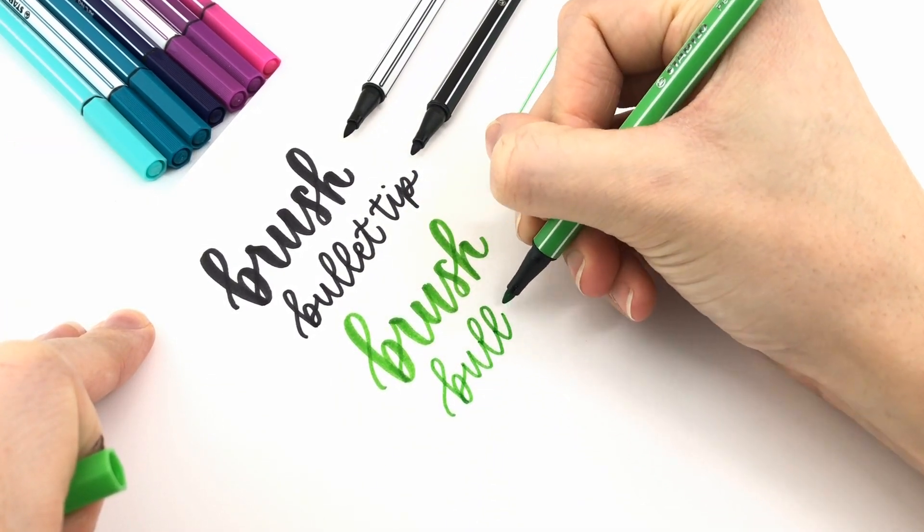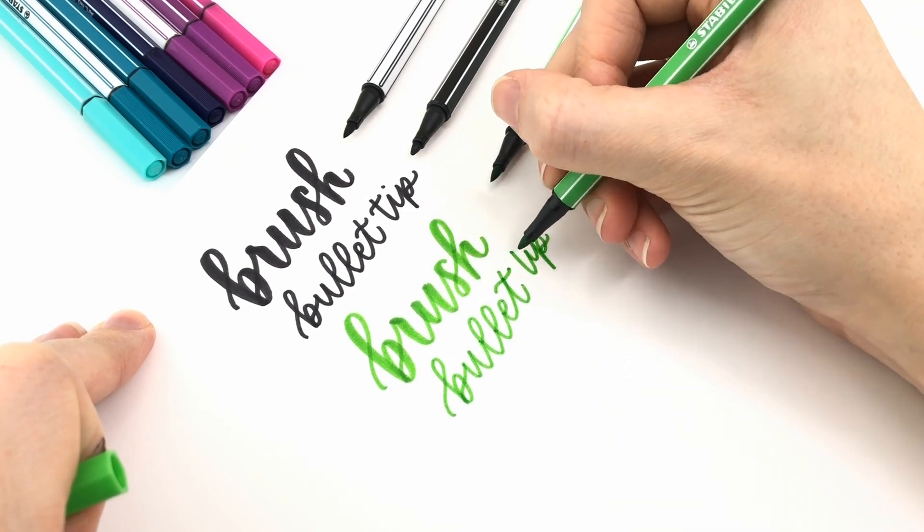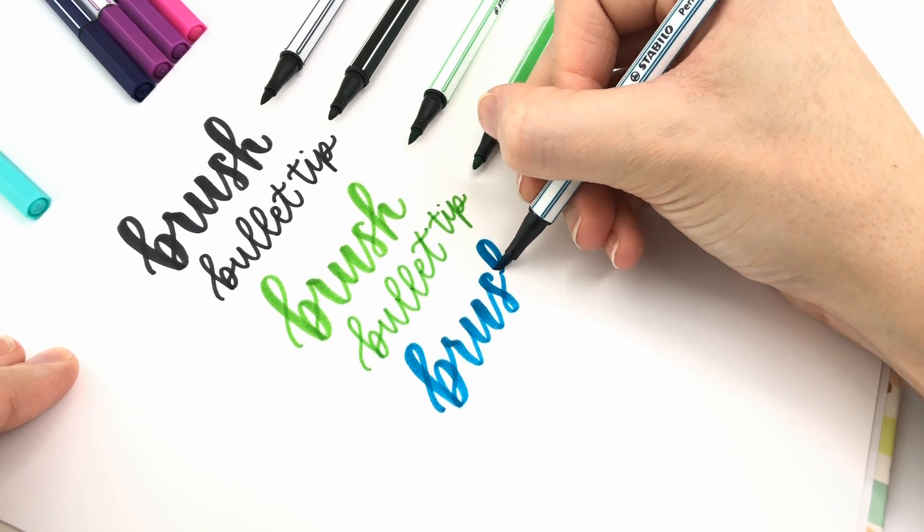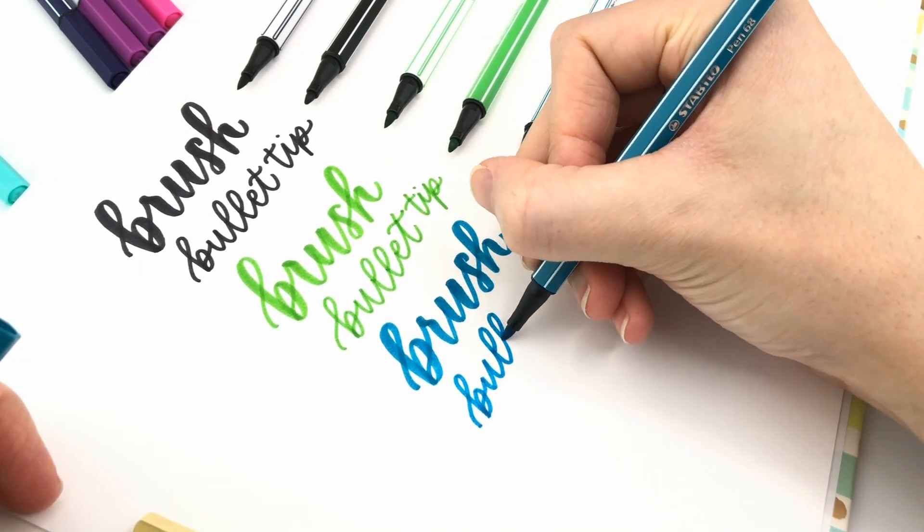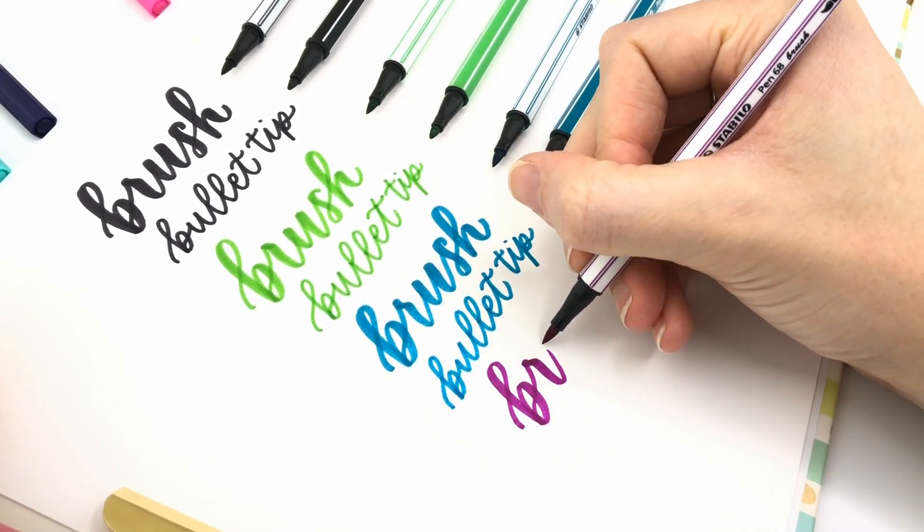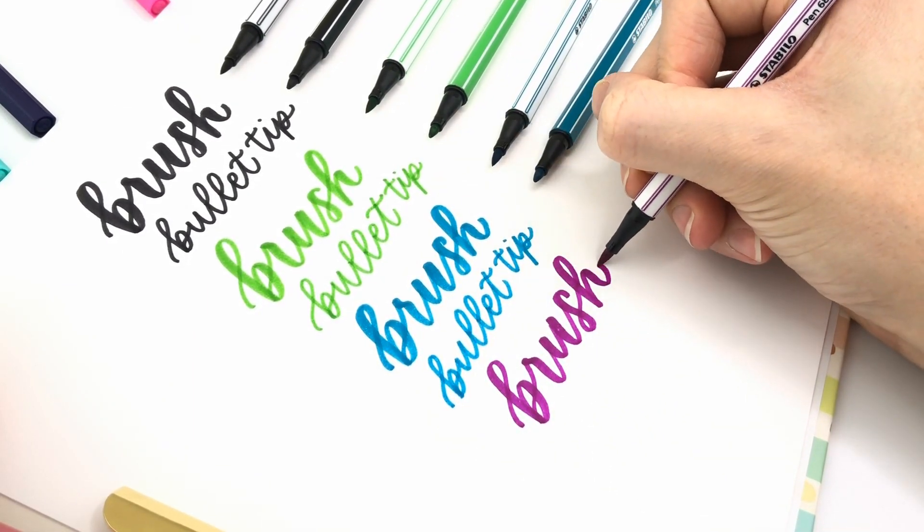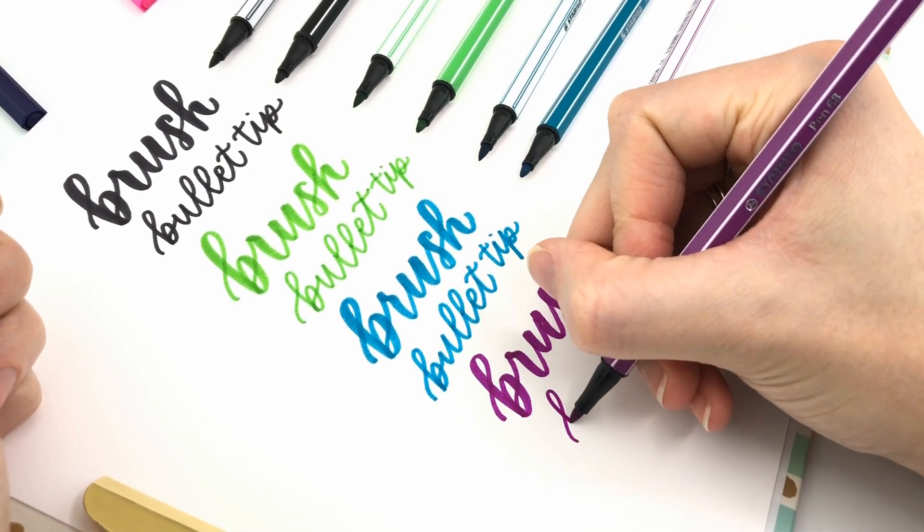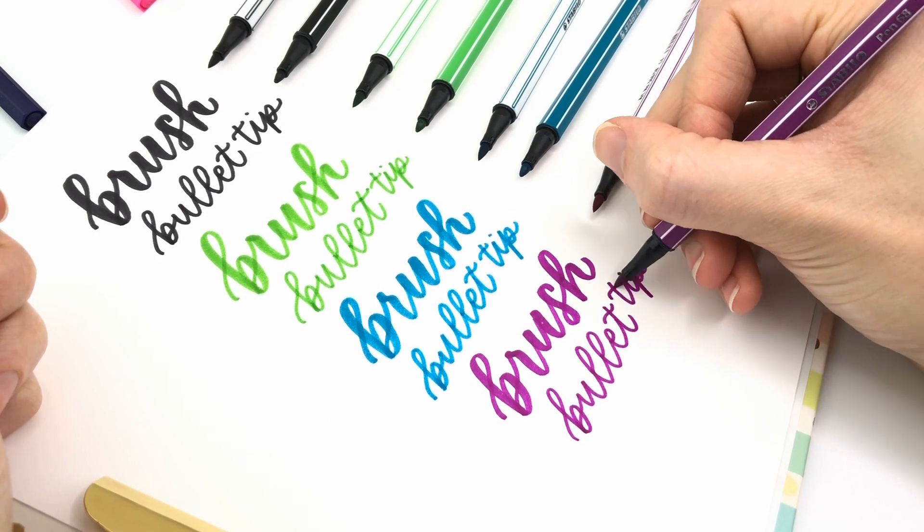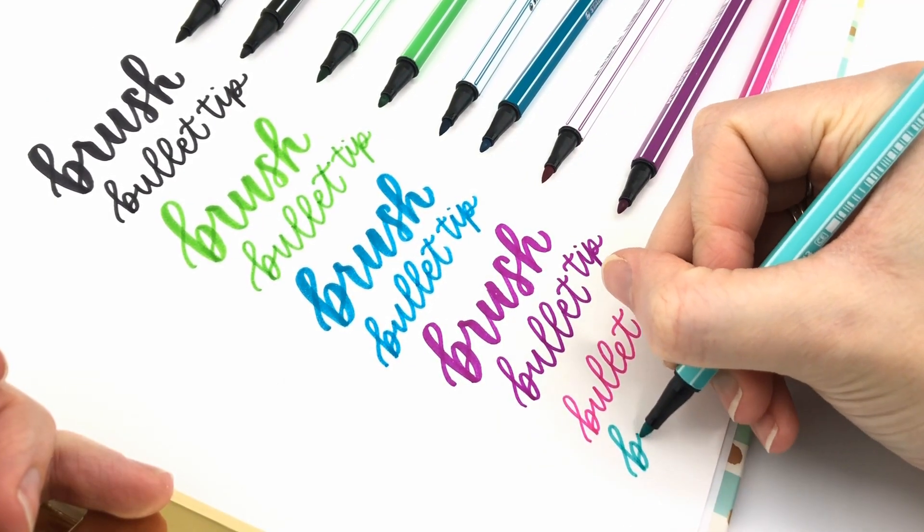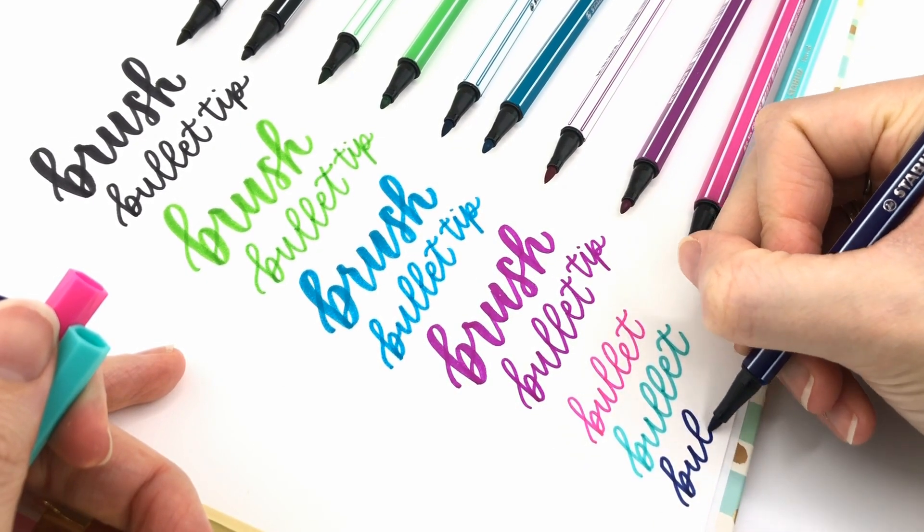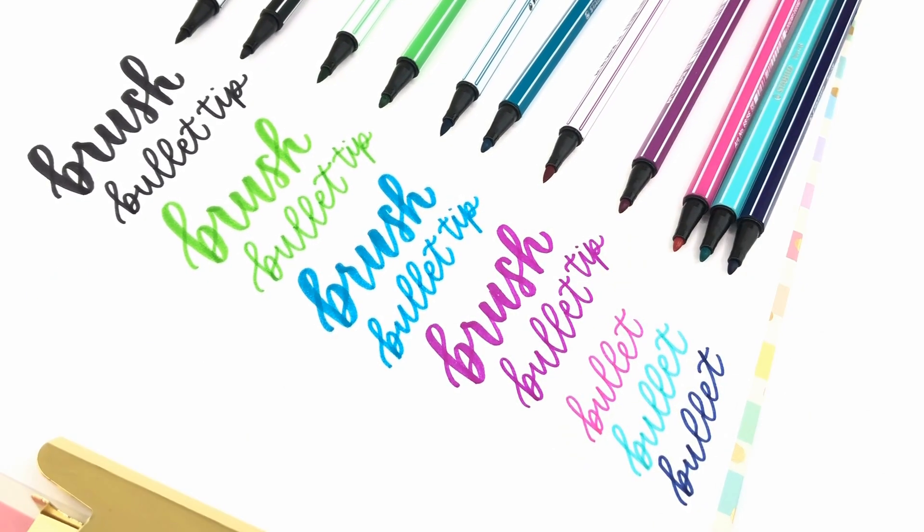You may know Stabilo for their highlighters or their fineliners. You know the ones with the orange pen bodies. Those ones are called 0.88. I don't know how they're choosing these numbers but those ones are a very fine tip like a 0.4 millimeter and I just don't really use them personally so I got rid of them in my recent desk declutter. Side note, if you want to see a desk declutter, let me know. The pen 68 is a 1mm size which I actually use a lot so these ones made it past my declutter.